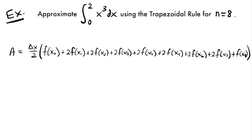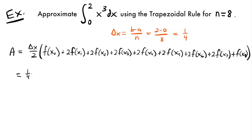To find our x values we first need to calculate delta x, which equals b minus a divided by n. We already know n equals 8. From our integral, a equals 0 and b equals 2. So delta x equals 2 minus 0 divided by 8, which is 2 divided by 8, equal to 1 fourth. So we'll have 1 fourth times 1 half.